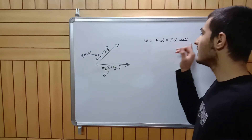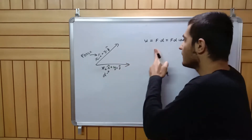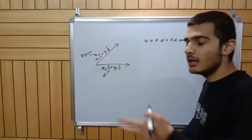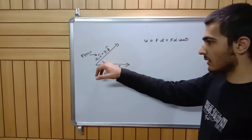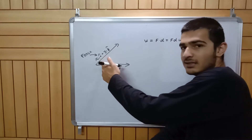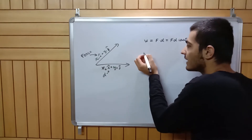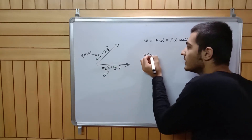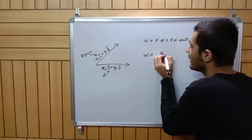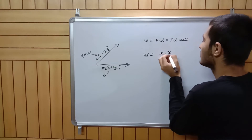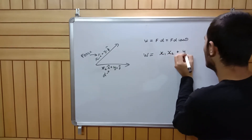The dot product means F times d times cos theta, where cos theta is the angle between them. But we didn't have theta directly, so we used geometry to find the cosine of the angle between the two vectors, and we solved all that and finally arrived at an expression for work.